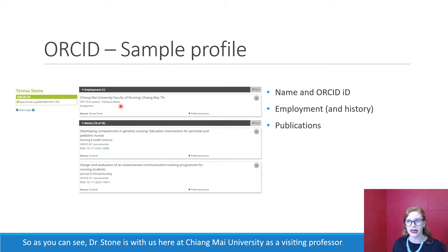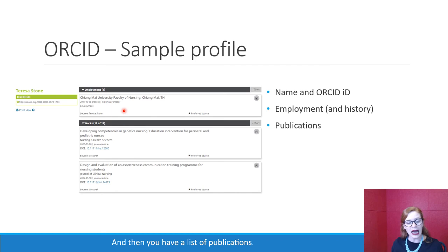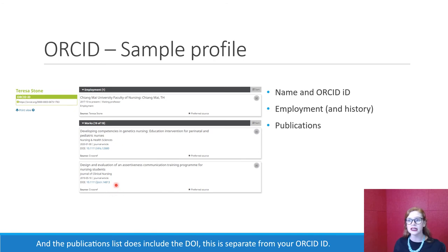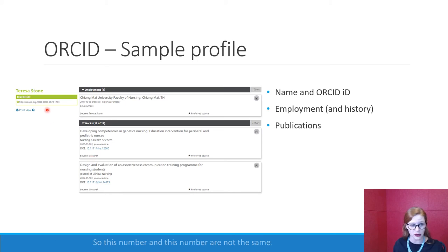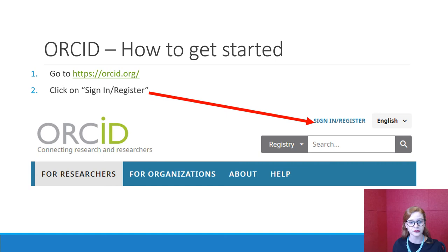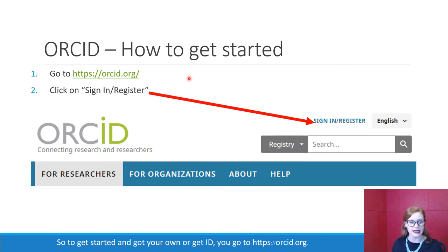On your ORCID profile you have a little employment history. As you can see, Dr. Stone is with us here at Chiang Mai University as a visiting professor. You also have a list of publications. The publications list does include the DOI — this is separate from your ORCID ID, so these two numbers are not the same.